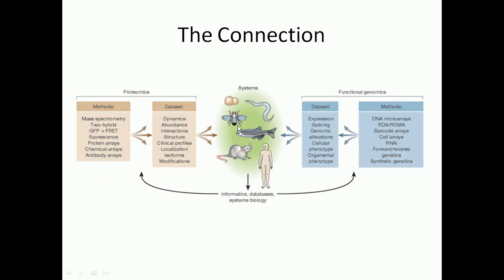Looking at the system-level connection: the system could be yeast, Drosophila, C. elegans, zebrafish, mouse, or human — whatever model organism is present. In proteomics, we want to see protein isoforms, protein dynamics, protein-protein interactions, protein structure and function, and protein modifications. To understand these, we rely on methods such as mass spectrometry, the yeast two-hybrid system for protein-protein interactions, GFP-FRET, confocal microscopy for fluorescence analysis, and protein arrays, chemical arrays, and antibody arrays.